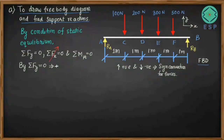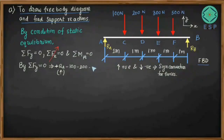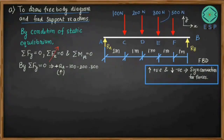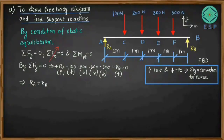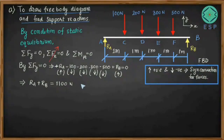Applying ΣFy = 0: RA is upward so positive, then minus 100 (downward), minus 200 (downward), minus 300 (downward), minus 500 (downward), and RB is upward so positive, giving RA + RB = 1100 newtons. This is Equation 1. The total downward load is 100 + 200 + 300 + 500 = 1100 newtons.